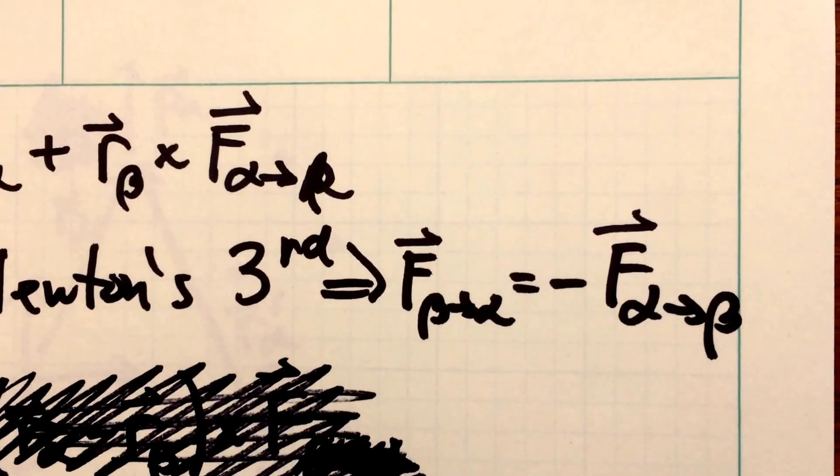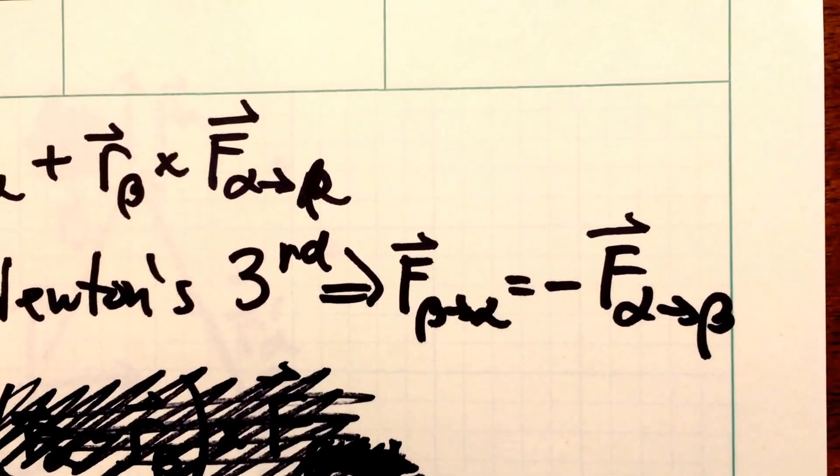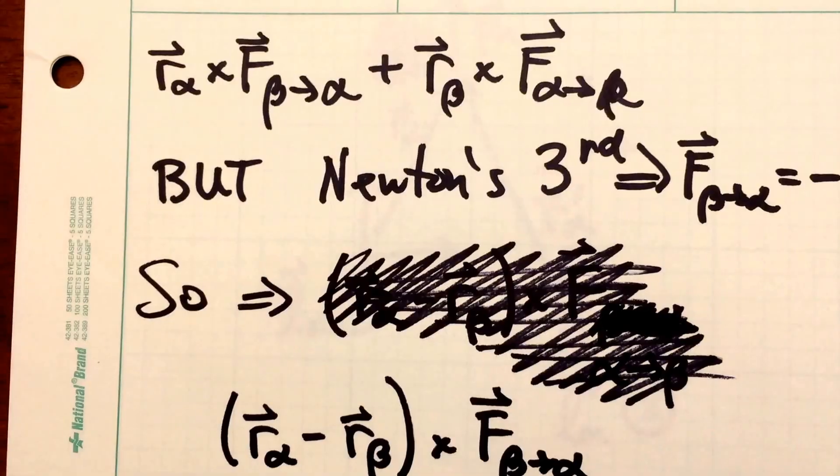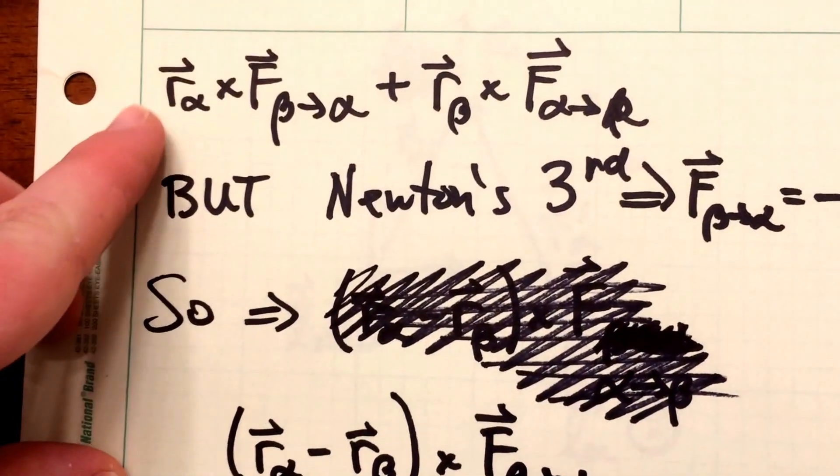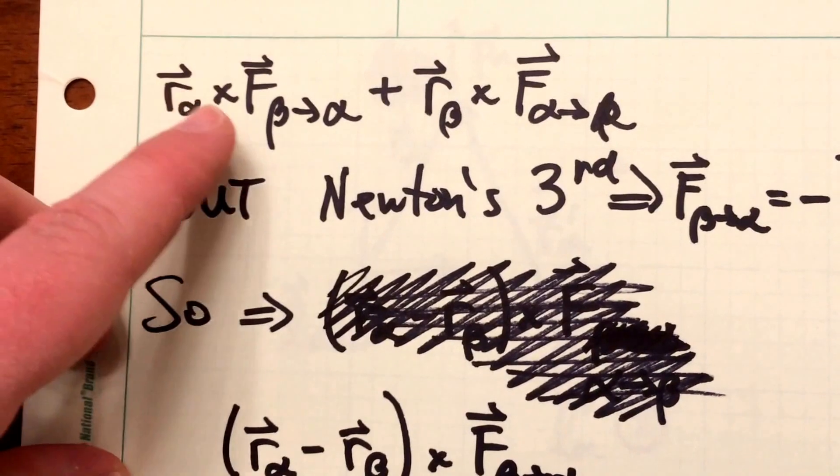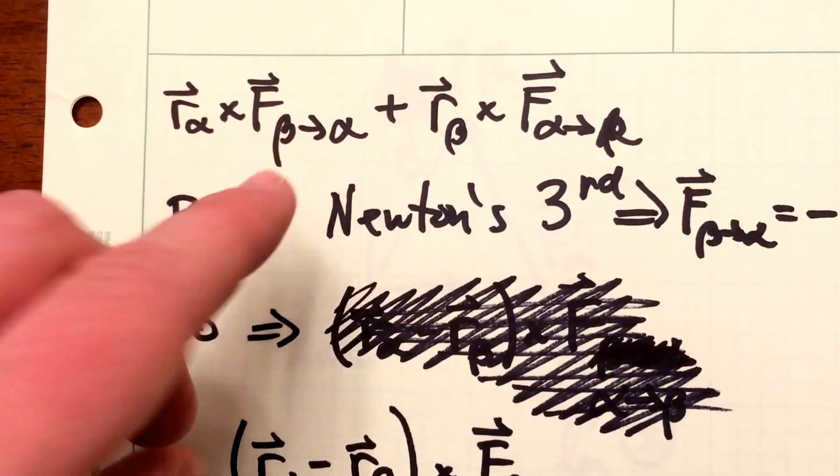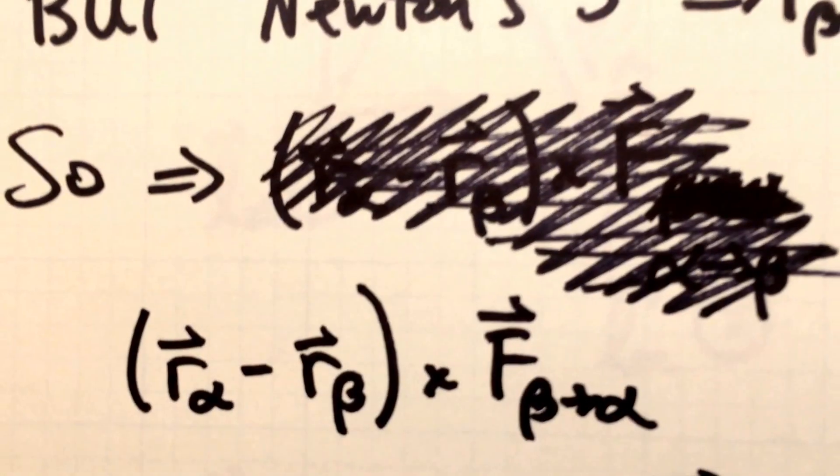Newton's third law tells us we have equal and opposite forces, and so the force of particle beta on alpha is equal and opposite to the force of alpha on beta. And so that means we can rewrite this expression and replace this force with minus this force, and that turns into this expression right here.